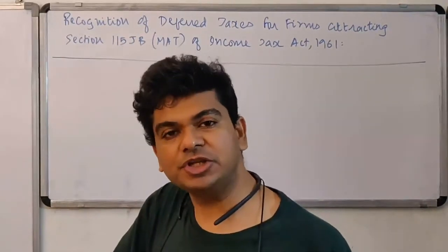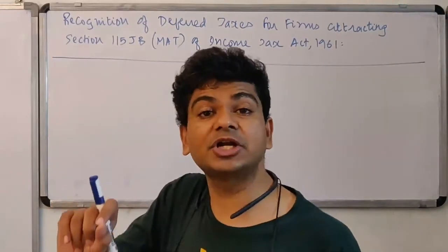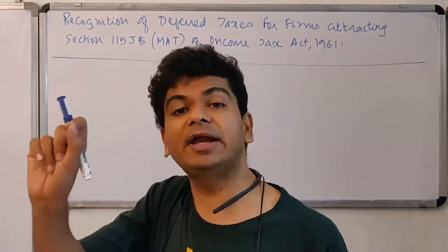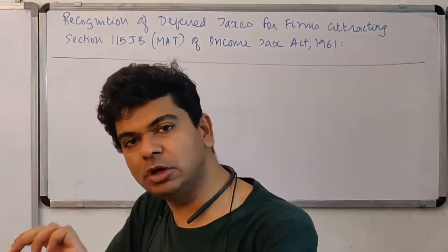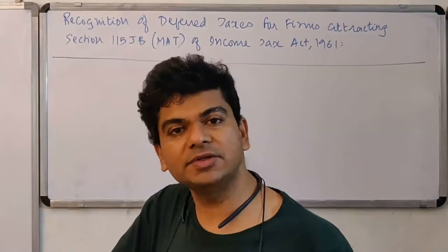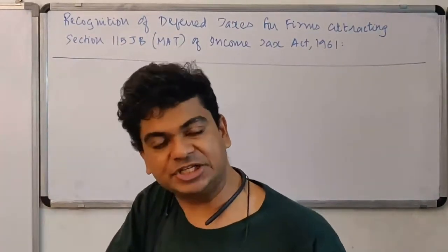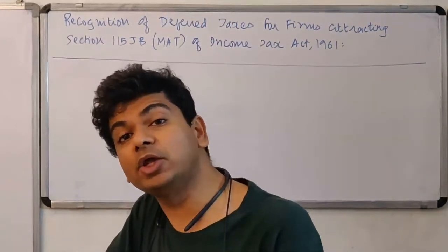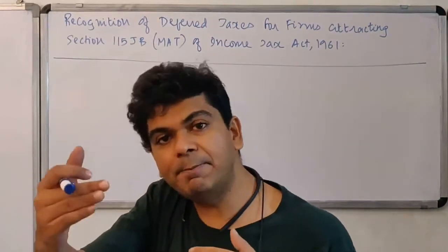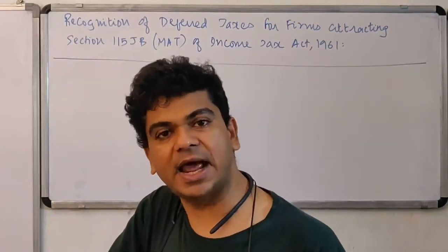Section 115JB, for example, says that calculate the book profit and then in Section 115JB one special rate is mentioned. Book profit multiplied by that special rate is what will give us the tax which is payable on book profit. Section 115JB also says that now calculate tax as per the regular tax provisions. Compare the two tax amounts. Whichever is higher, that is the tax to be paid.